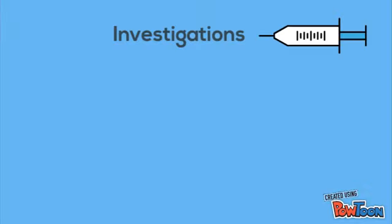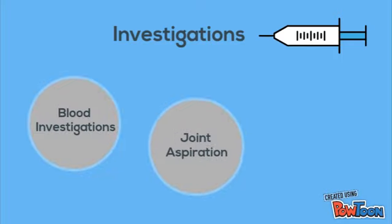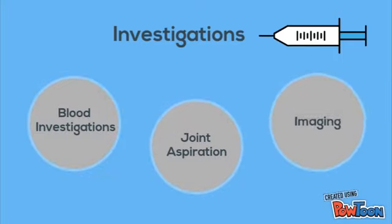The key investigations needed to make a diagnosis are bloods and a diagnostic joint aspiration. Imaging may be used to exclude other pathologies, as X-rays show no early changes in septic arthritis.